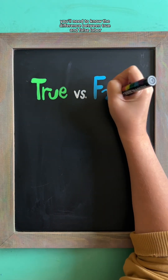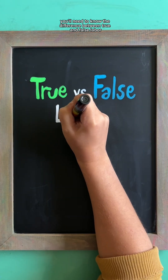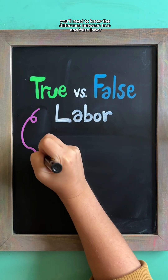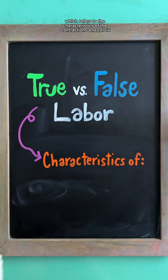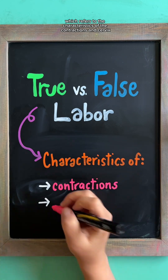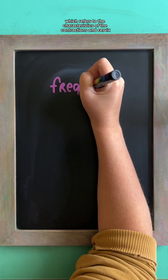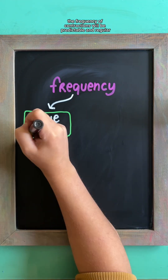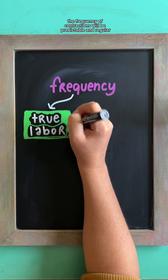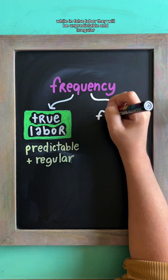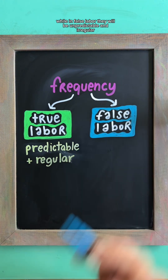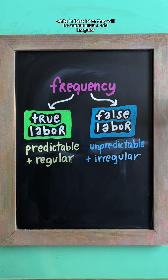In your maternity section, you'll need to know the difference between true and false labor, which refers to the characteristics of the contractions and cervix. In true labor, the frequency of contractions will be predictable and regular, while in false labor, they will be unpredictable and irregular.